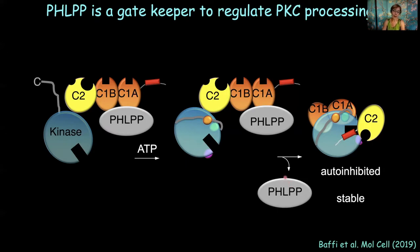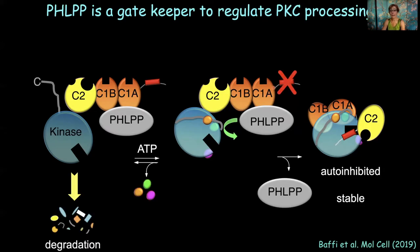What if we have aberrant PKC — for example, cancer-associated mutations in the pseudosubstrate that don't allow auto-inhibition? In this case it's stuck in this open conformation. PHLPP remains bound to PKC and sees the phosphate being put on by autophosphorylation. As soon as it goes on, PHLPP immediately dephosphorylates it. This dephosphorylation then triggers the down-regulation cascade where PKC eventually gets degraded. So PHLPP is a gatekeeper to regulate PKC processing — it provides a quality control mechanism to ensure that aberrant PKC does not accumulate in the cell.